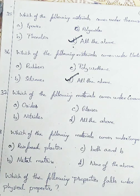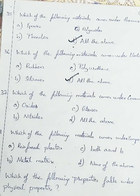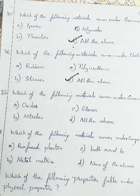Question number 37: which of the following materials comes under ceramics? Option A: oxides, Option B: nitrites, Option C: glasses, Option D: all the above. Oxides, nitrites, and glasses come under the category ceramics. So we will be going with Option D, all the above.